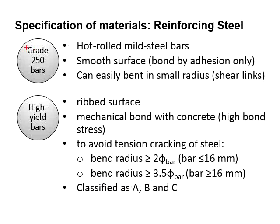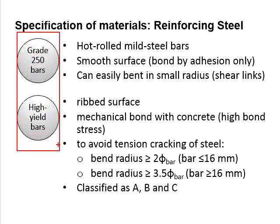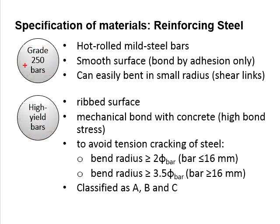The two types of steel used include Grade 250 and high yield steel. Grade 250 has a specified yield strength of 250 kilonewton per mm squared, while high yield steel bar has a yield strength of 500 newton per mm squared.